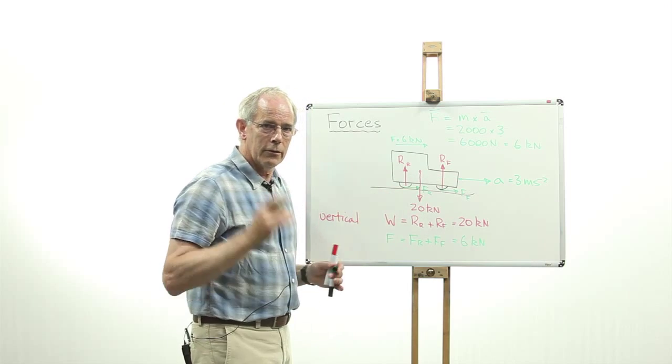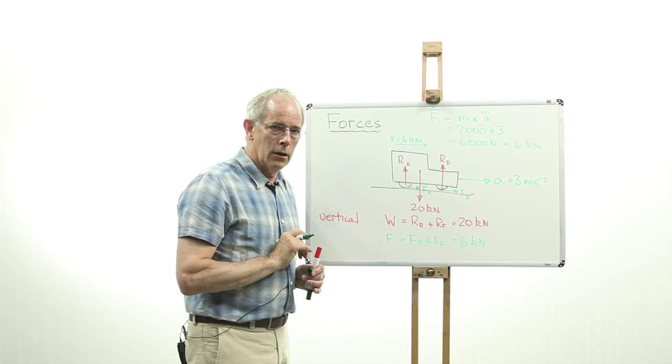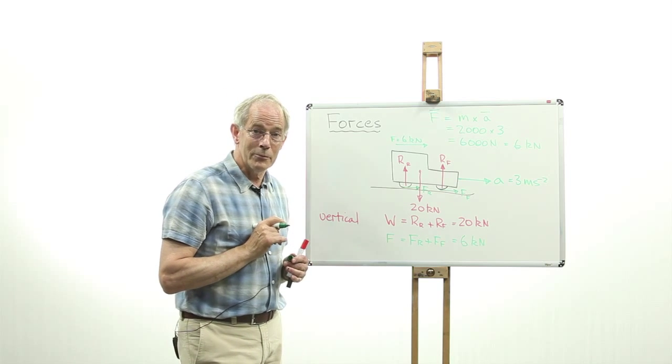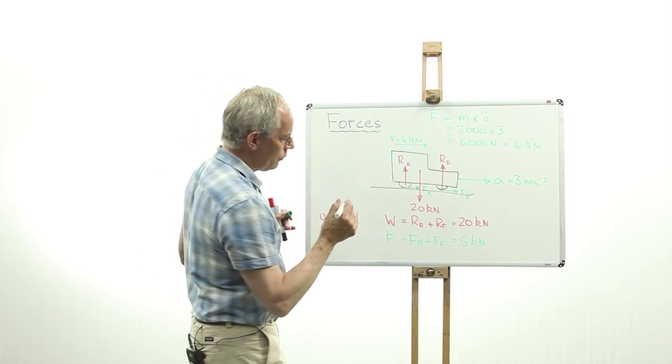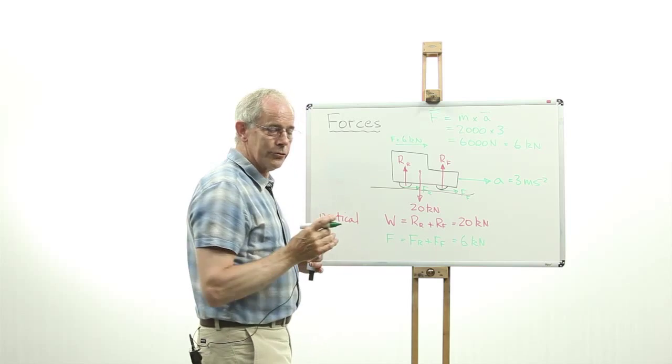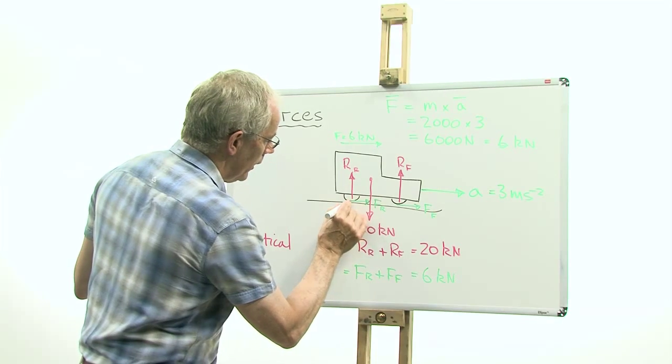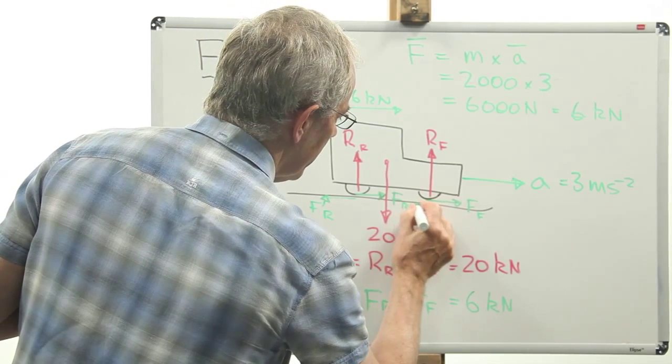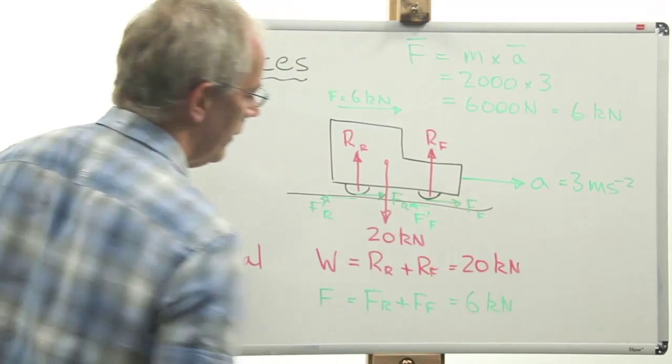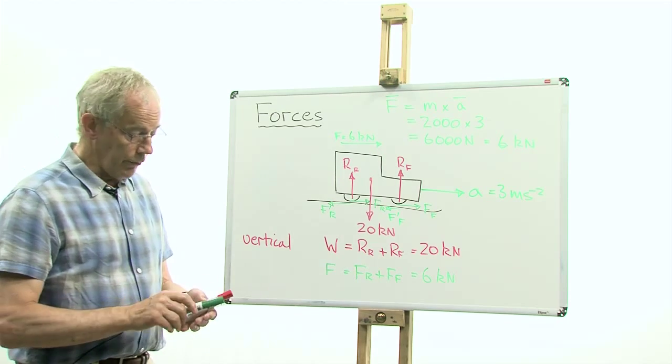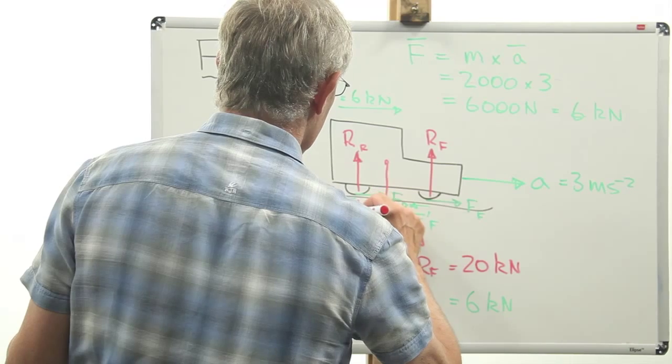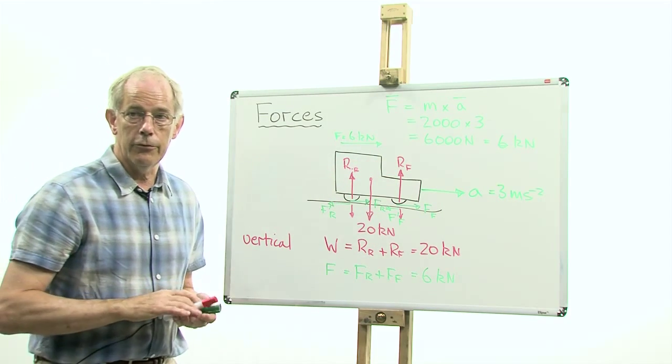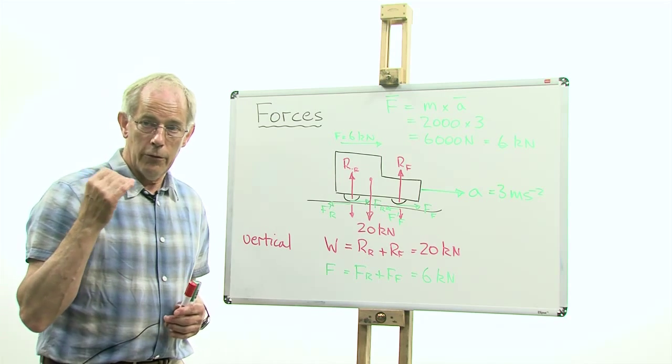It might seem strange that the road is exerting a forward force on the tires. But at the same time, the tires are exerting forces on the road. So we haven't quite completed the picture. We can also include in this the force exerted by the tires on the road. These forces are equal and opposite to the forces exerted by the road on the tire. And the same thing applies to the reaction forces, which must also be there to balance the vertical reaction forces of the road on the tires.